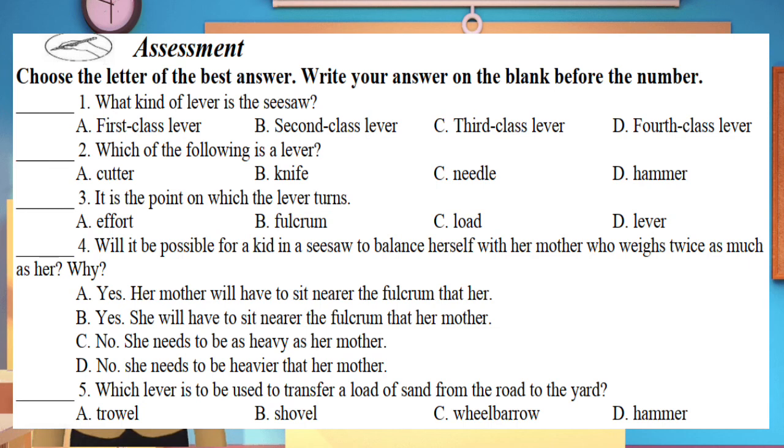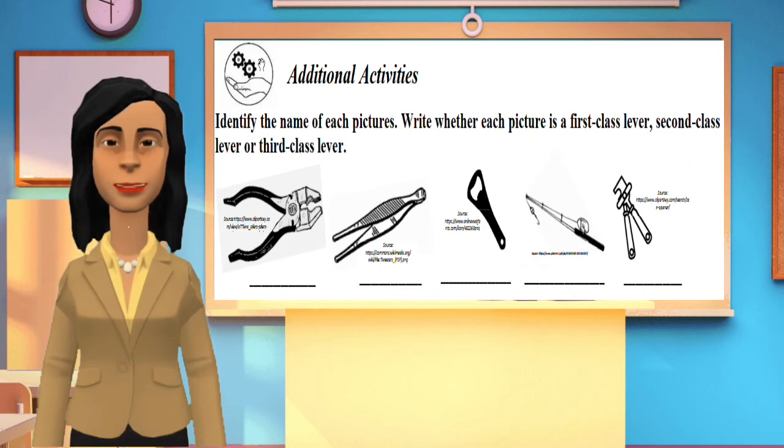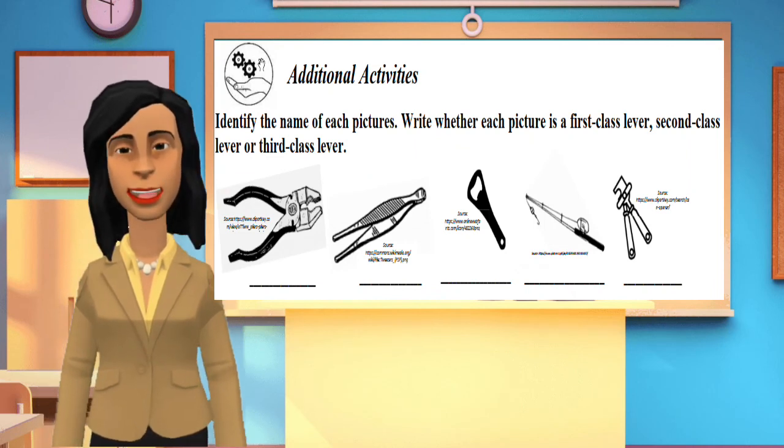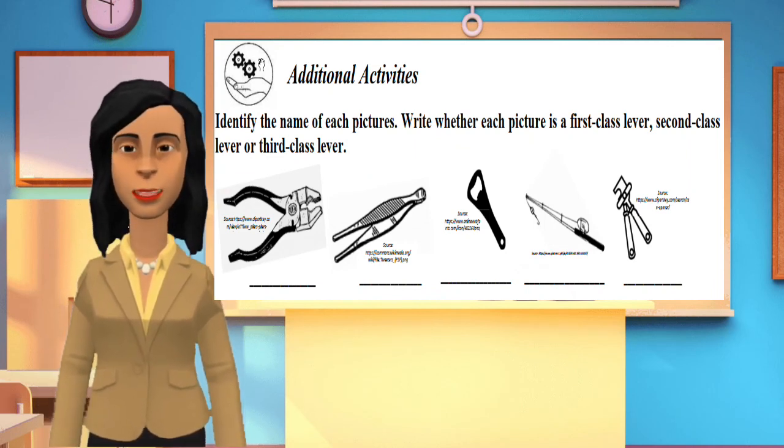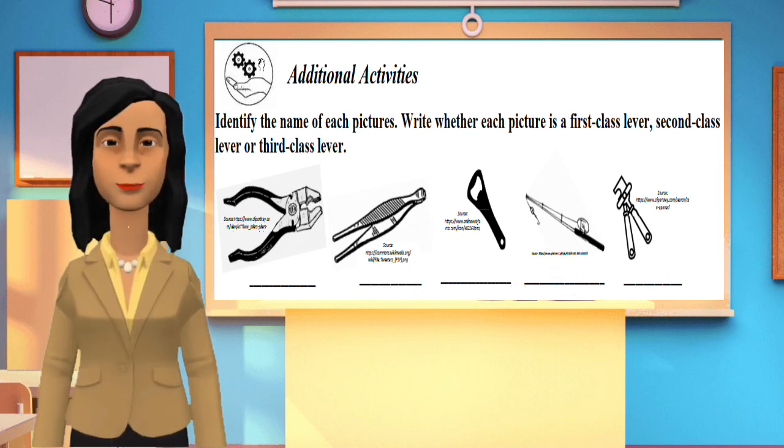Number five: which lever is to be used to transfer a load of sand from the road to the yard? A. Trowel, B. Shovel, C. Wheelbarrow, or D. Hammer. Additional activities: identify the name of each picture. Write whether each picture is a first class lever, second class lever, or third class lever.